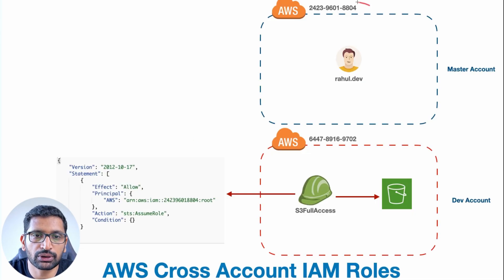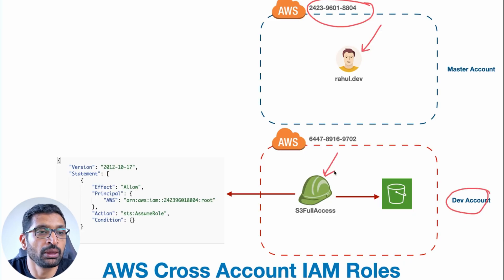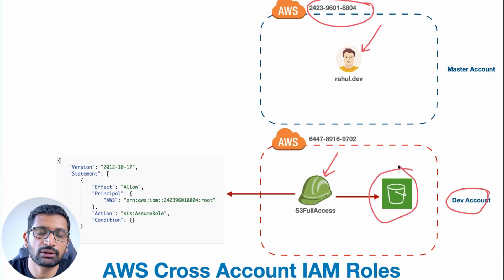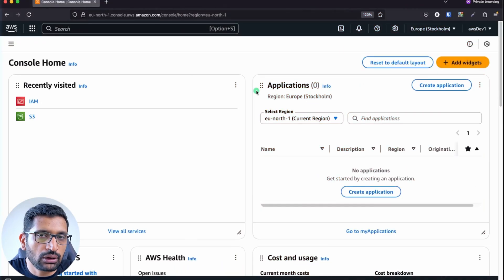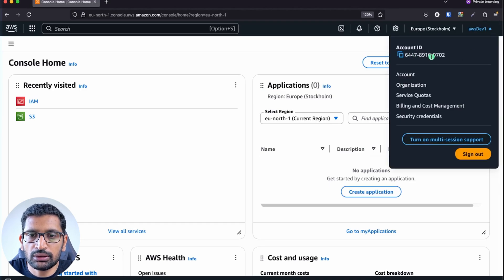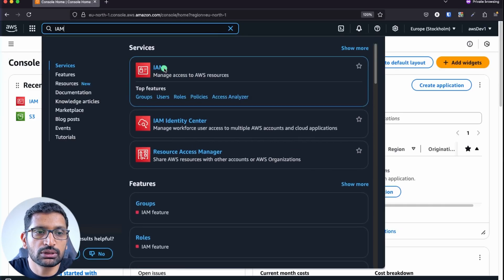Going back to our diagram — we were working in the master account, created the user, and now I'm going to jump to the dev account to create the S3 permission and role. After that I'll show you the existing S3 bucket, and we'll try to access it with this user by assuming that role. Now I've switched to the dev account, which you can see ends with 9702. In this account we'll create an IAM role, so let's go to the IAM section.